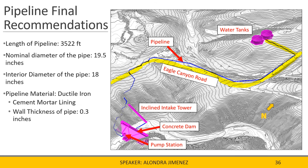Moving on to our pipeline final recommendations, our pipeline length is 3,522 feet. Our pipeline will have a nominal diameter of 19.5 inches and an interior diameter of 18 inches, excavated 3 feet below our roadway. Our pipeline material is ductile iron due to its strength, durability, and cost efficiency. The pipe will be coated with a cement mortar lining to reduce its susceptibility to corrosion and will have a wall thickness of 0.3 inches.